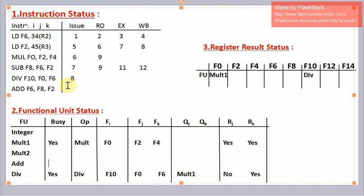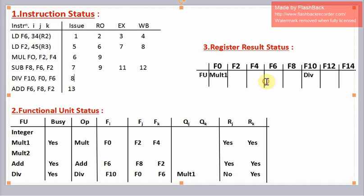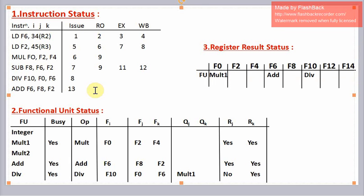Since the adder unit is now free, in the 13th clock cycle we can issue the add instruction. Now the adder unit is busy. The operation to perform is add. Destination register is f6, source registers are f8 and f2. Now both f8 and f2 are present. This adder unit is going to write f6. Since both operands are available, in the 14th cycle we can perform the read operand stage of this add instruction.